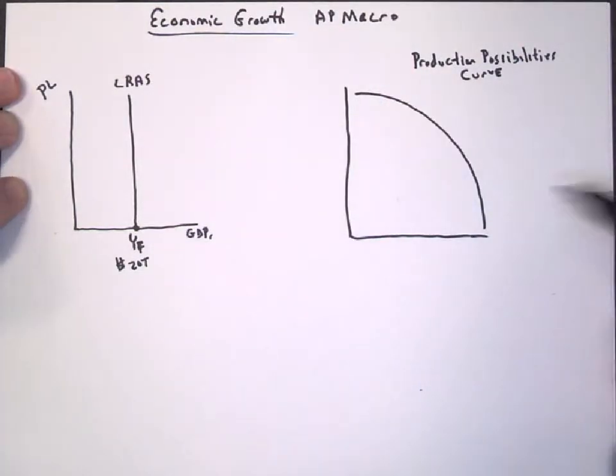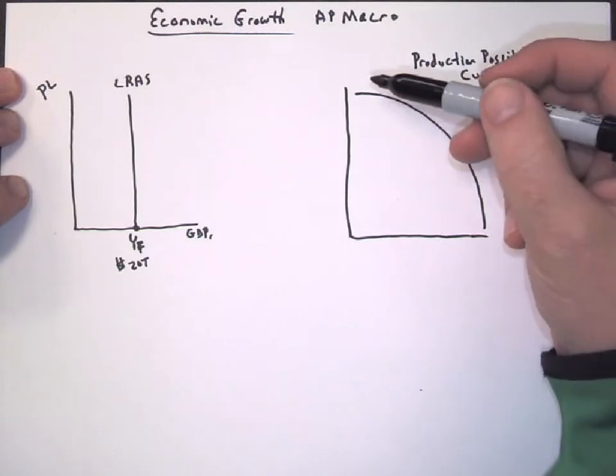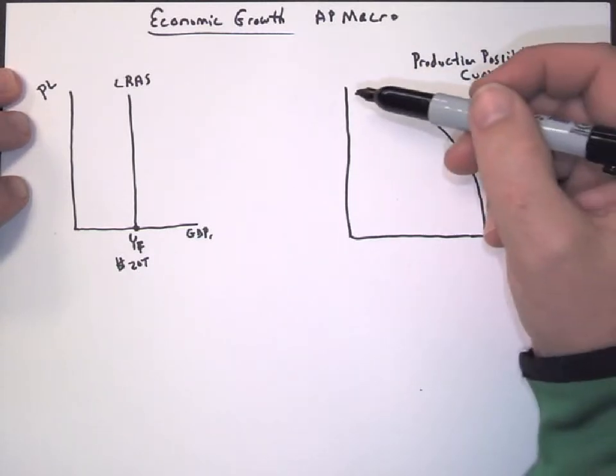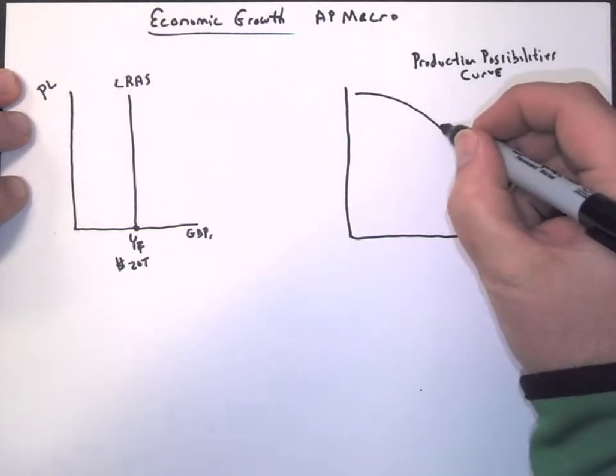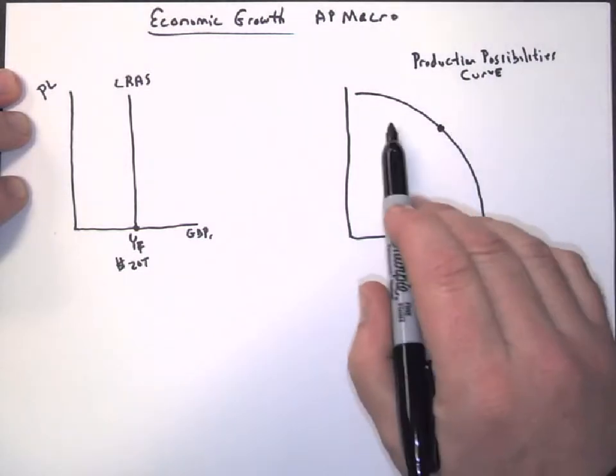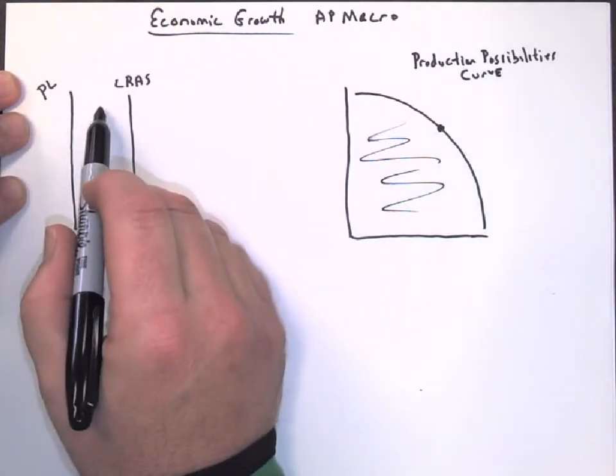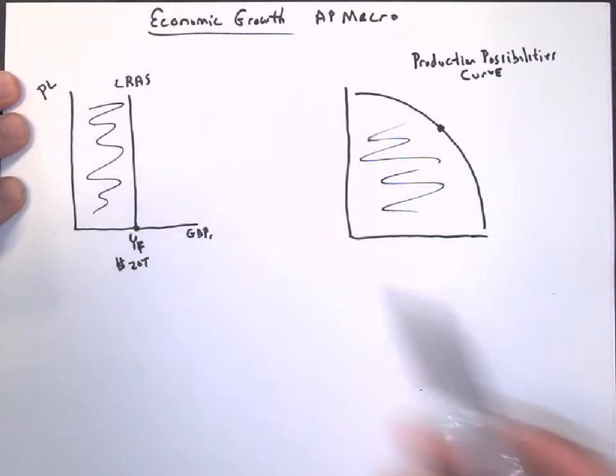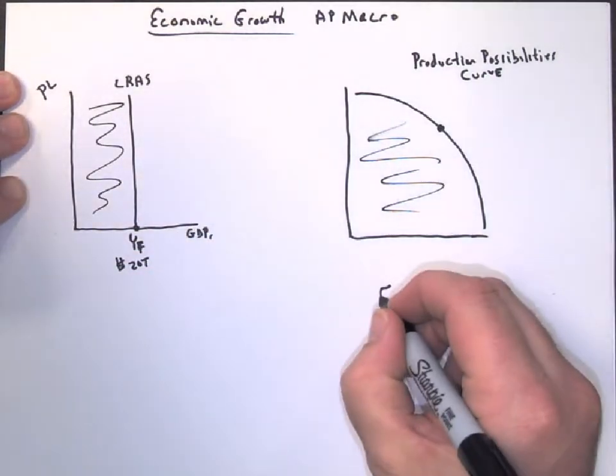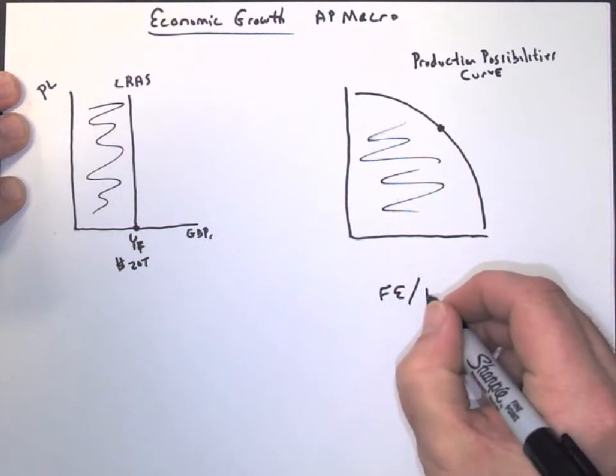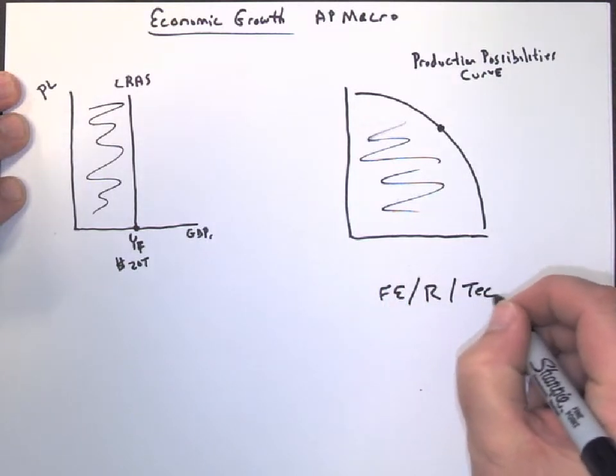So, on the production possibilities curve, this is a combination of two particular items, capital or consumer goods. So on this curve, this shows that we can make all this GDP. Over here, we could make all of this GDP. If we have full employment, resources, and technology.